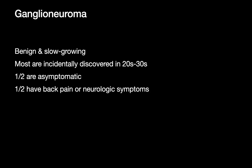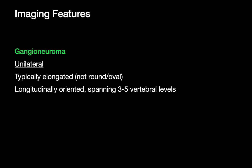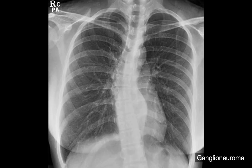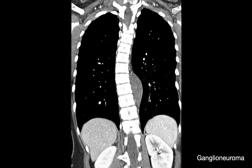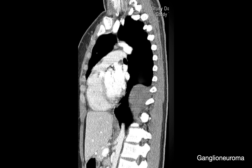Ganglioneuromas are benign neurogenic tumors of sympathetic chain origin. They're slow growing, often incidentally discovered in early adulthood, and some patients are asymptomatic. Ganglioneuromas are usually unilateral and often have a more spindle or elongated shape, longitudinally oriented in the posterior mediastinum spanning several vertebral body levels. On coronal CT MPR, you can see a well-circumscribed posterior mediastinal mass that is relatively spindle-shaped.